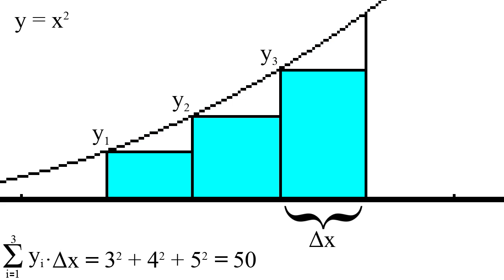One way I could get an approximation is to use three rectangles as it is a trivial operation to calculate the area of a rectangle. I will call the width delta x and the height of each rectangle y1, y2 and y3. If I add the areas of the rectangles, I get an answer of 50.